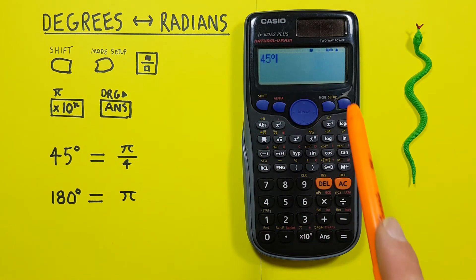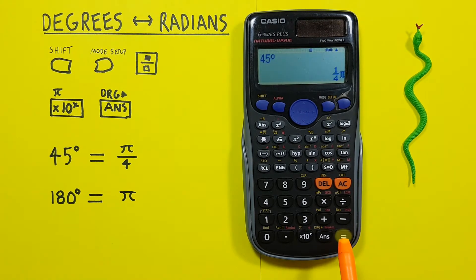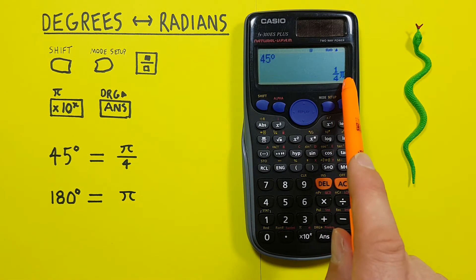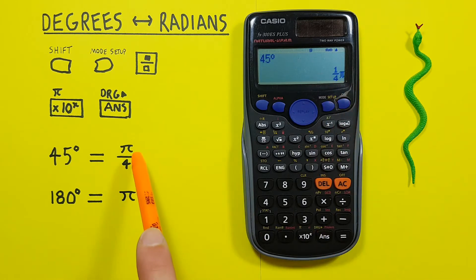In radians mode, if we press equals, we see we get 1 over 4 pi, which is a different way of writing pi over 4.